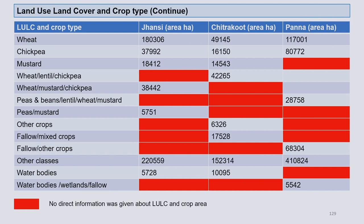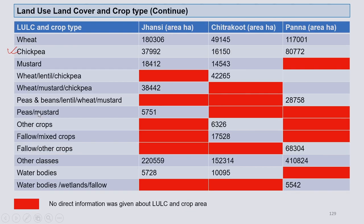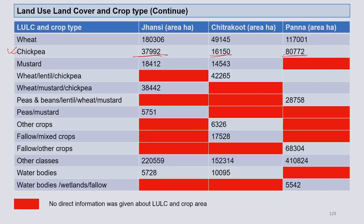Looking at the data table: chickpea in Jhansi is around 38,000 hectares, Chitrakut 16,000 hectares, and Panna 80,000 hectares. This is clearly visible from the picture too — Panna has heavy concentration of chickpea. This is how remote sensing and GIS can help: you can collect and analyze information from a long distance. Sitting in Guwahati, through remote sensing and GIS data, you can analyze the present situation of anywhere in India — that is the beauty of this technology.